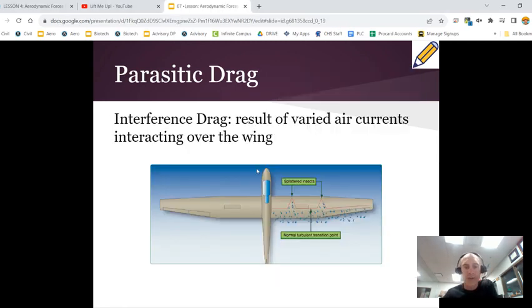Then you also have this thing called interference drag. And that's just the result of varied air currents interacting over the wing. So if you have, you know, some imperfections along the wing, you can get air currents that are sort of deflected. And that can cause interference drag. So make a note of that third one right there.